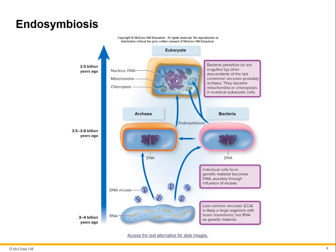That's the idea of endosymbiosis, and it does seem to have some merit because chloroplasts and mitochondria both have similar DNA — they have a single loop of DNA just like bacteria — and they have 70S ribosomes, which is something unique to bacteria. We will talk about those differences when we get into chapter four in the next chapter.